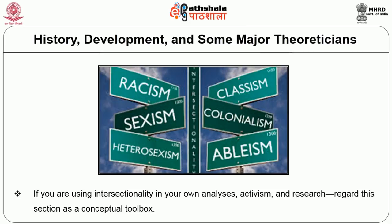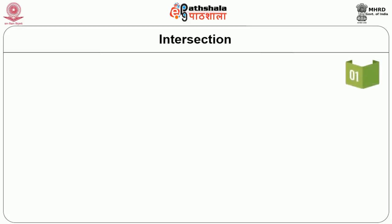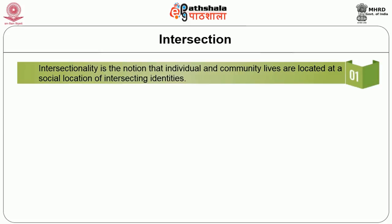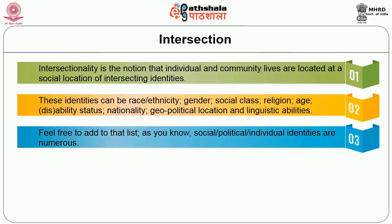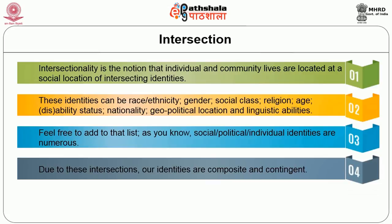Section 2: Basic Concepts. Intersection is the notion that individual and community lives are located at a social location of intersecting identities. These identities can be race, ethnicity, gender, social class, religion, age, disability, nationality, geopolitical location, and linguistic abilities. Social, political, and individual identities are numerous. Due to these intersections, our identities are composite and contingent.